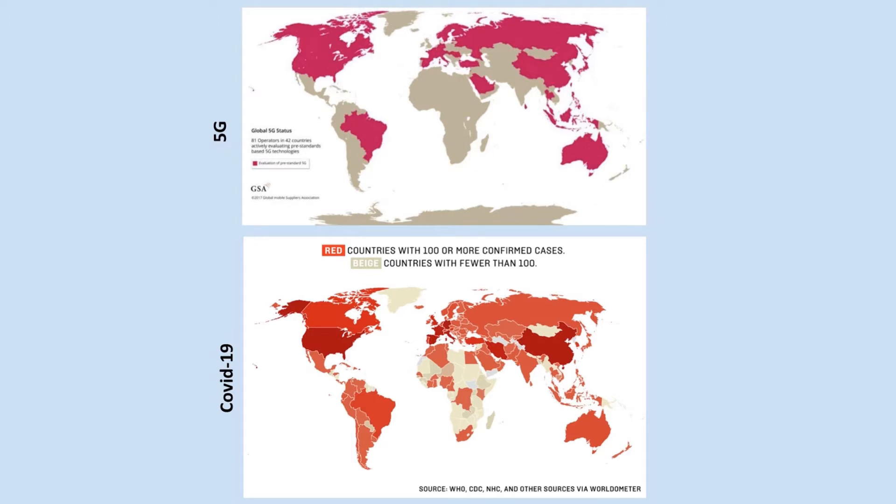These two graphs represent a theory that was getting a lot of internet time earlier this year. People were trying to claim that 5G cell service was causing COVID-19, and they created graphs showing that the areas dealing with significant COVID-19 infections correlated with areas that had 5G service. But an alternate explanation is that 5G service is available in areas with large populations, and COVID-19 would initially spread through heavily populated areas.